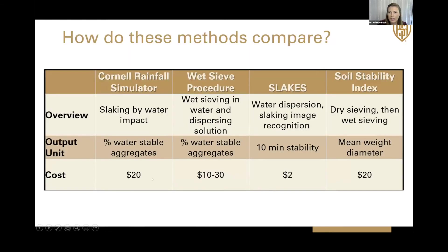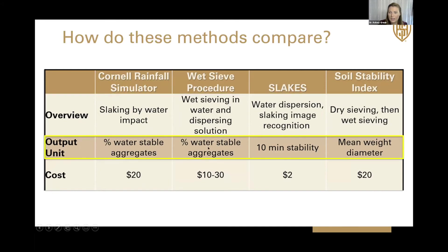Let's take a step back and look at the big differences among these methods. The first big difference is the external force: two methods use a wet sieving procedure, one looks at rainfall or raindrop impacts, and another looks at water dispersion using image recognition. This gives us differing output units — Cornell and wet sieve give percent water stable aggregate, Slakes gives 10-minute stability, and the soil stability index gives mean weight diameter. Although these have different outputs and ranges, all of them are positively associated with aggregate stability, meaning the higher the output number, the greater your aggregate stability.